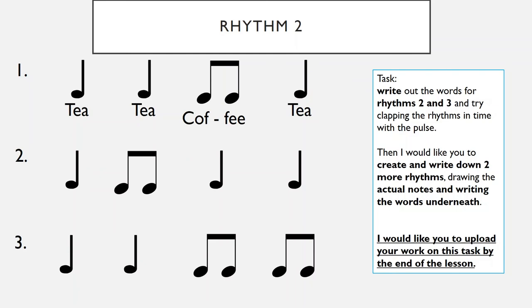I'd like you to do the same for rhythms two and three — write tea or coffee underneath each note and then have a go at clapping them. After you've done that, I'd like you to write two more rhythms of your own. This time I'd like you to actually write the notes — the crotchets and the quavers, the dots and the lines — and then write the words underneath, so you can get used to writing the notes. Have a go at clapping those too. You should then have four rhythms with words written on your piece of paper, which I'd like you to take a photo of and send to me.